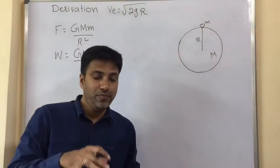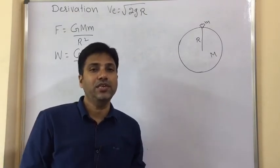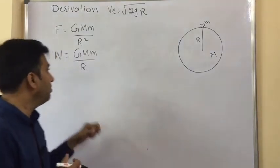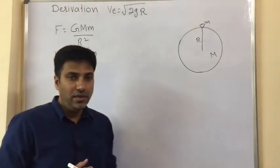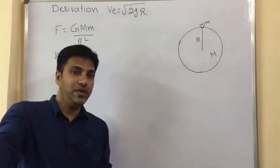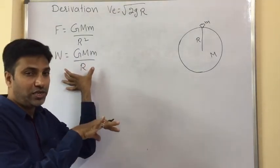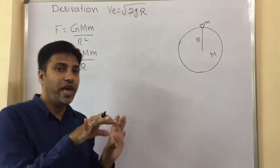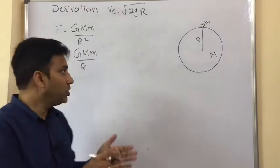Now we have to move this object from the surface of Earth, so we are doing certain work against gravitational field. That work done is given by W is equal to GMm by R. Now we have to move the object away from the Earth, so whatever work is done here that will be stored as potential energy.